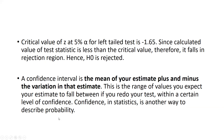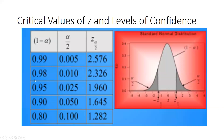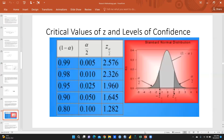For reference, confidence level 0.99 gives a critical z-value of 2.576; confidence level 0.98 gives 2.3; and confidence level 0.95 gives 1.96. We are going to proceed with the 0.95 confidence level.